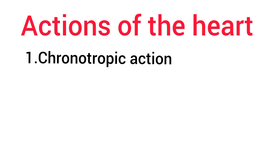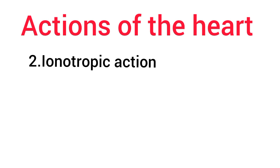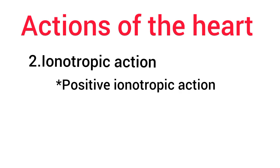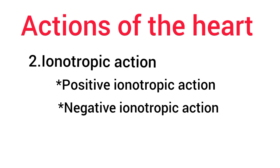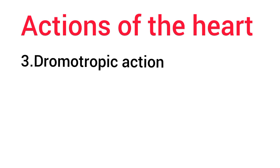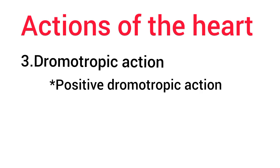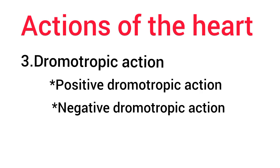The force of contraction of the heart is called the inotropic action. It is of two types: the positive inotropic action, or increase in the force of contraction, and the negative inotropic action, or decrease in the force of contraction. The dromotropic action is the conduction of impulse through the heart. It is of two types: the positive dromotropic action, or increase in the velocity of conduction, and the negative dromotropic action, or decrease in the velocity of conduction.